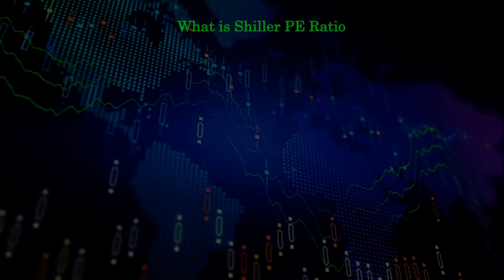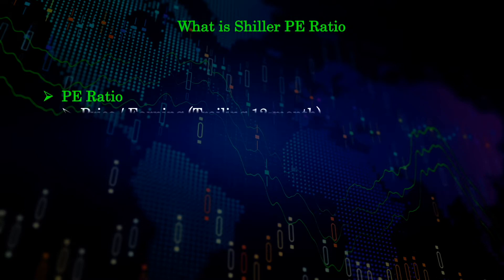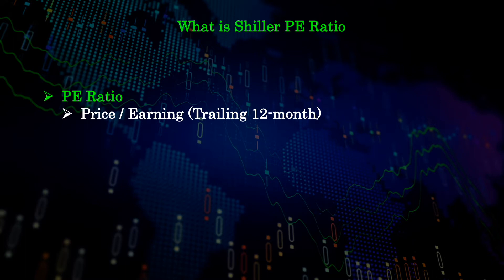Usually, when we talk about P/E ratio, we refer to the trailing 12-month price-to-earnings-per-share ratio. This is the standard definition and remains one of the fundamental variables people use to evaluate an individual company's current value. One can even roughly categorize stocks into value or growth stocks based on this factor.